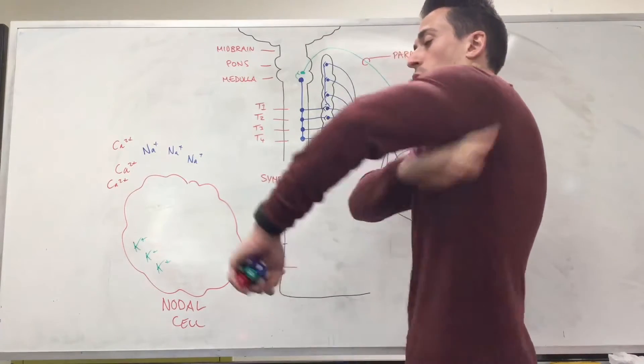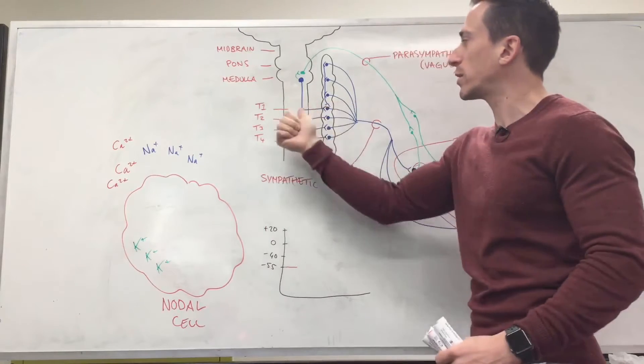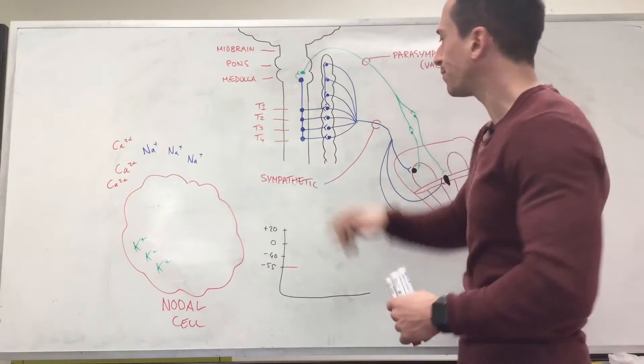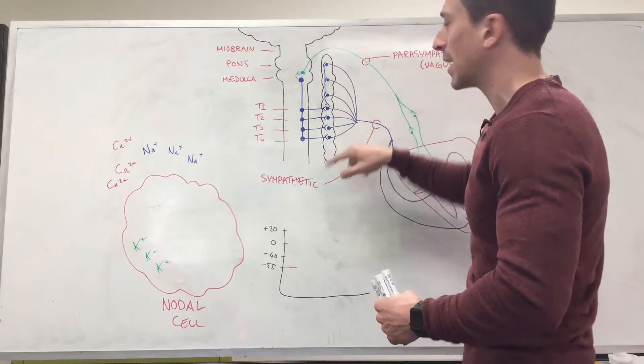So your thoracic T1, T2, T3, T4, and it shoots a signal out to what we term the paravertebral ganglia.